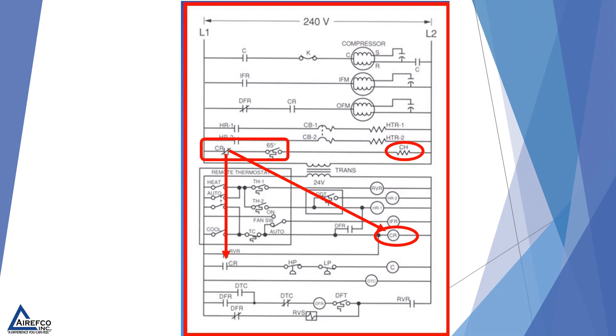The contact completes the circuit through the 65 degree temperature sensor. So if the temperature is at or below 65 degrees, the crankcase heat in the off cycle will be energized.